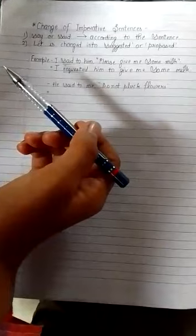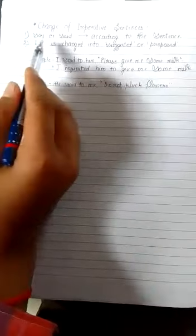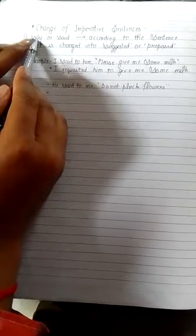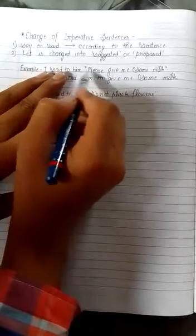to do requests, give orders, advise, etc. So whenever the sentence has 'said' or 'said to', it will change according to the sentence. Like here, 'said to please' - 'please' means request, so it becomes 'I requested'. And 'let' changes into 'suggested' or 'proposed'.